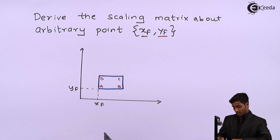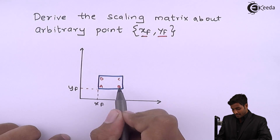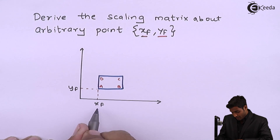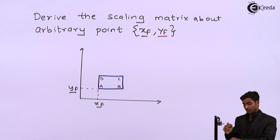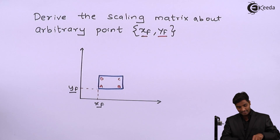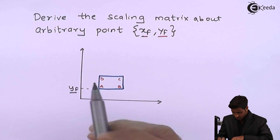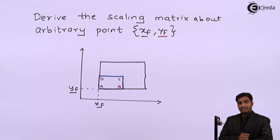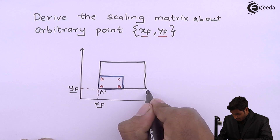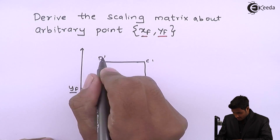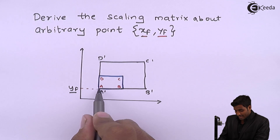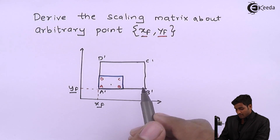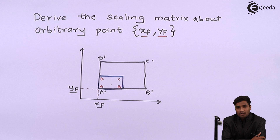In the figure, ABCD is the figure which has some arbitrary point away from the origin — arbitrary point Xf and Yf. It is to be scaled such that the final figure, represented in dash form, will become A-dash B-dash C-dash D-dash. We have to scale this inner figure to obtain this outer figure, and for that we will require scaling.